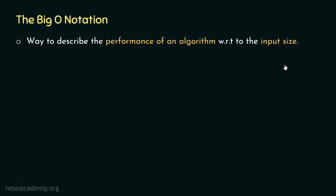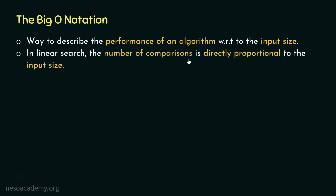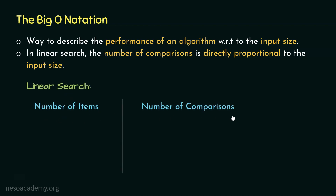In one of our lectures, we discussed linear search and binary search. We learned that in the case of linear search, the number of comparisons is directly proportional to the input size. To understand this, let's compare the number of items with the number of comparisons. If the input size is 10, linear search needs 10 comparisons to conclude whether the item we are looking for is available in the list or not.